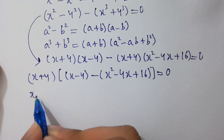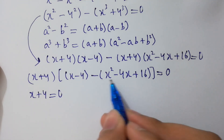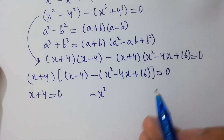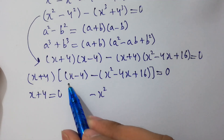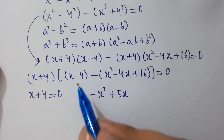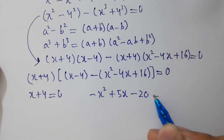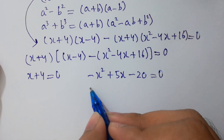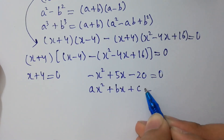Expanding inside the bracket: x minus 4 minus x squared plus 4x minus 16 equals negative x squared plus 5x minus 20. So we have (x plus 4)(negative x squared plus 5x minus 20) equals 0.